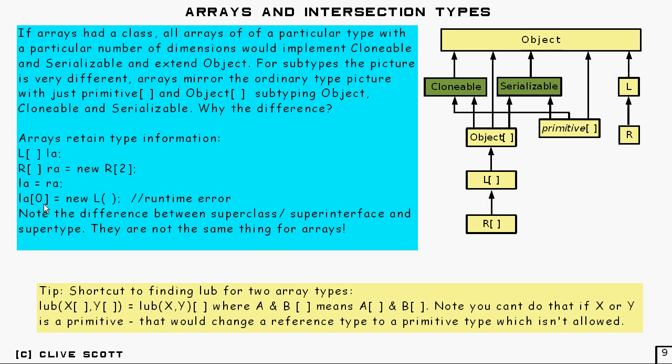And you're going to get a runtime error, because it knows that this L is actually pointing to this thing, which is really an R. And you can't set something of type R to being something of type L, because it's the wrong way round. It's a subtype.